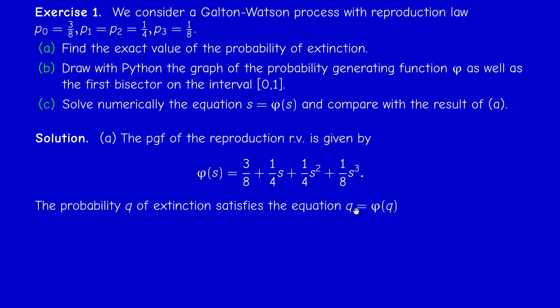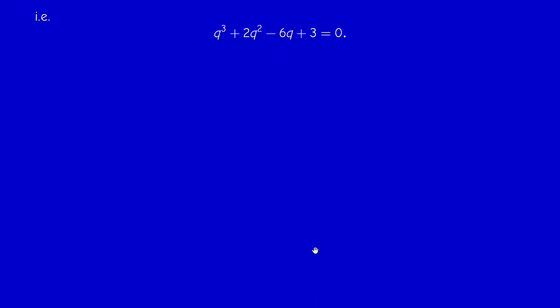We must solve the equation q equals phi of q, or s equals phi of s, same thing. This is our equation now. This is a third order polynomial equation. In this case it's very easy because we already know that q equals one is a solution. To solve it, let us multiply everything by eight and rearrange. We do the Euclidean division, dividing this polynomial by q minus one, and we get a second order polynomial.